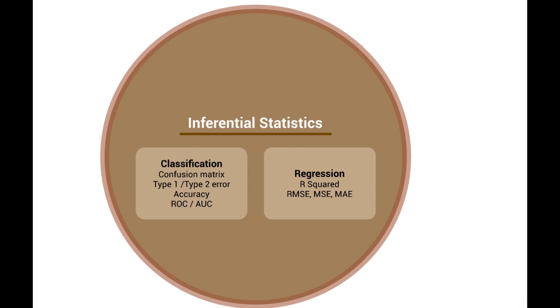For example, for classification problem where the outputs are discrete categories, some common metrics are confusion matrix, type 1 error and type 2 error, accuracy, ROC and AUC.